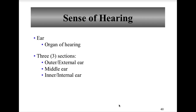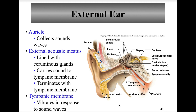The ear has three sections: the outer external ear, the middle ear, and the inner internal ear. The auricle is the outer ear, containing elastic cartilage, and its function is the collection of sound waves. The external acoustic auditory meatus is the ear canal, where vibrations of sound waves begin, directing them toward the tympanic membrane. It is lined with ceruminous glands and carries sound to the tympanic membrane, terminating there.